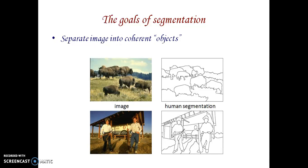We are going to separate an image into coherent objects — animals, human beings, roads, grasslands, etc. We are going to extract particular objects from the image.